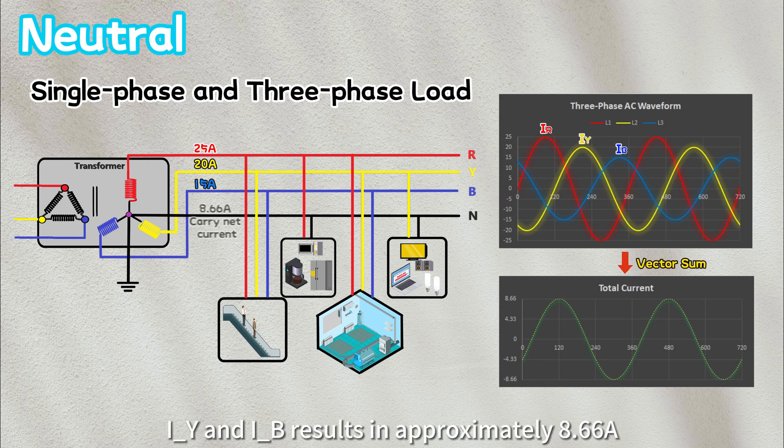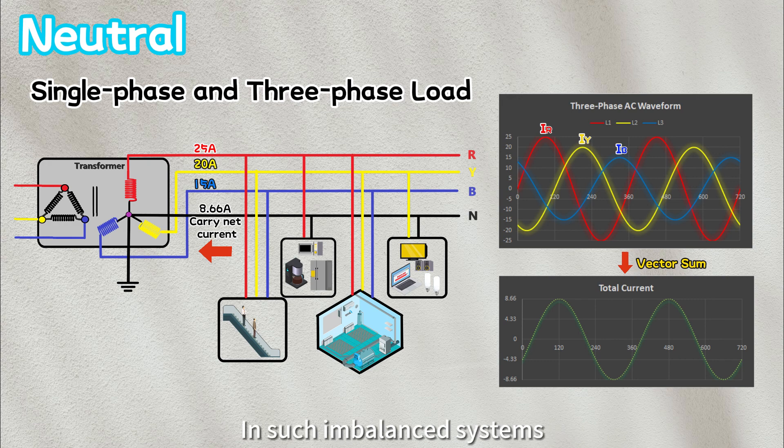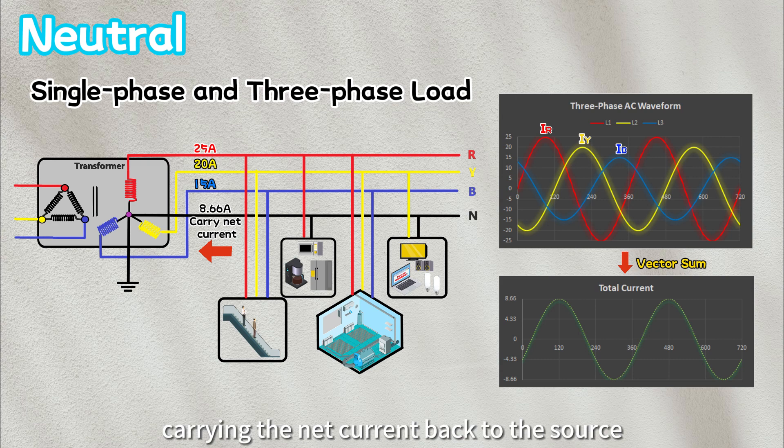IY, and IB result is approximately 8.66 amps, indicating an imbalance and not zero. In such unbalanced systems, the neutral assumes the crucial role of carrying the net current back to the source.